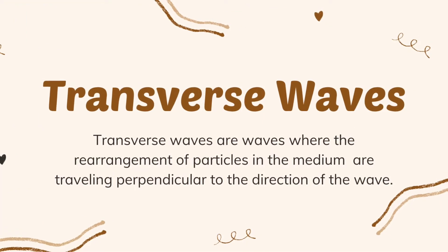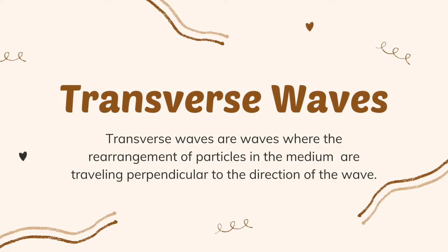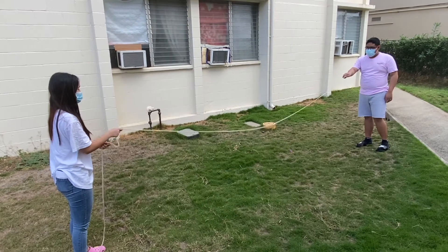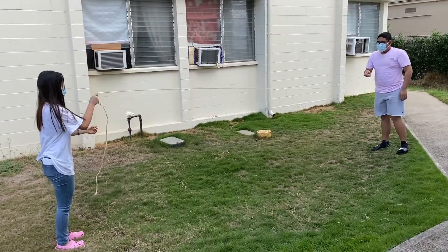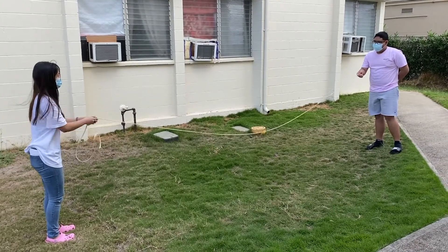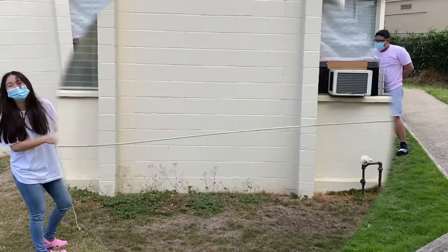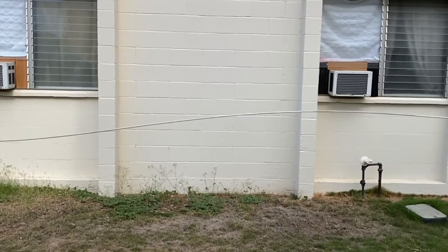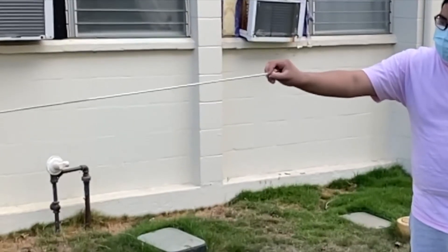Transverse waves are waves where the rearrangement of particles in the medium are traveling perpendicular to the direction of the wave. A rope demonstrates a transverse wave because the wave travels from one end of the rope to the other. The rope does not move from left to right; instead, it actually moves up and down. If two people were to hold each end of the rope and took turns swinging it up and down, we notice that the rope forms the shape of a wave and has crests and troughs as we keep doing this movement.